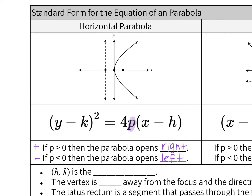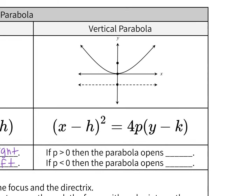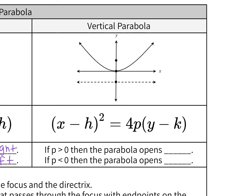If it's vertical, the equation changes a little bit. This time it's x first: (x - h)² = 4p(y - k). That letter p — whatever number is there determines which way the parabola opens. If it's a positive number, p greater than 0, it's going to open up. If it's less than 0, so that's negative numbers, it's going to open down.